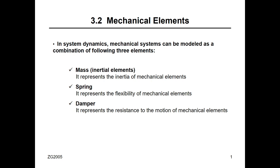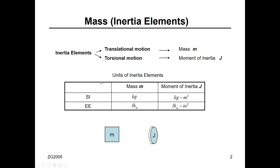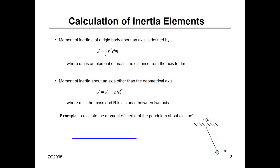What are the elements of a mechanical system? Any mechanical system can be composed of one or all three of these elements: mass, spring, and damper. Mass represents the inertia of the system. Spring represents the flexibility. Damper represents the resistance to motion. For translational motion, mass is in kilograms; for torsional motion, we use mass moment of inertia in kg·m².